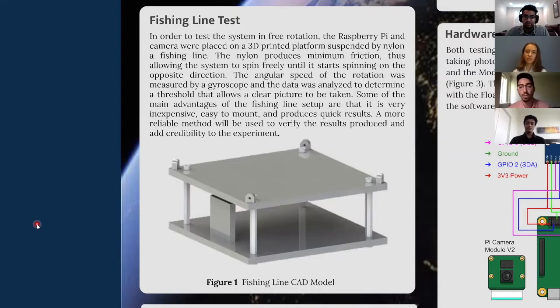This, however, was only done based on a qualitative analysis, and a quantitative study of the pictures would be conducted in further experiments. Some of the main advantages of this method were that it was quite inexpensive, easy to set up, and produced quick results. It is, however, hard to repeat with the same values, and the system is not always stable on the other planes of motion.